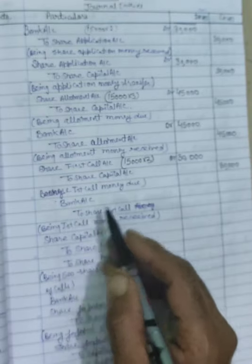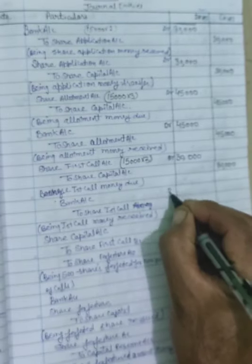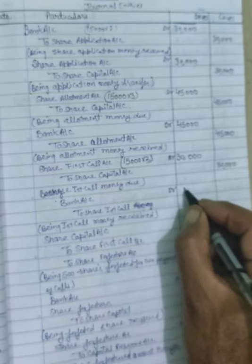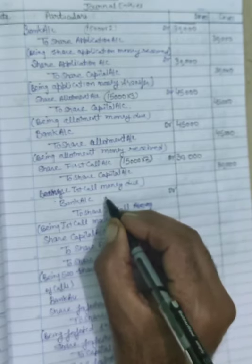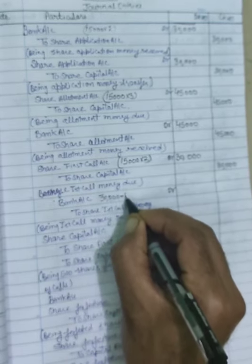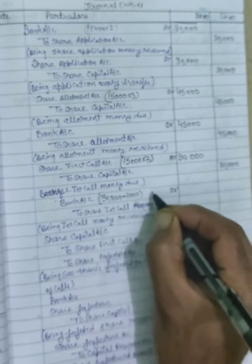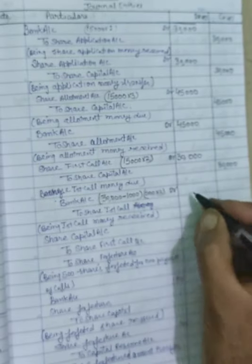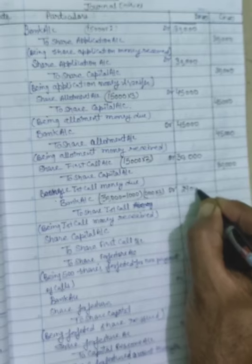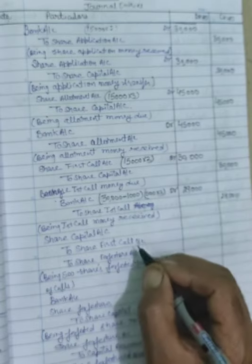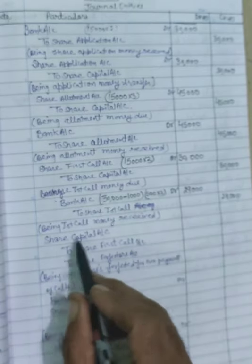First call money received: Bank account debit to share first call account. One person holding 500 shares did not pay Rs.2 per share, so total receivable was Rs.30,000 but Rs.1,000 was not received. Therefore bank received Rs.29,000 and Rs.29,000. Narration: being first call money received.